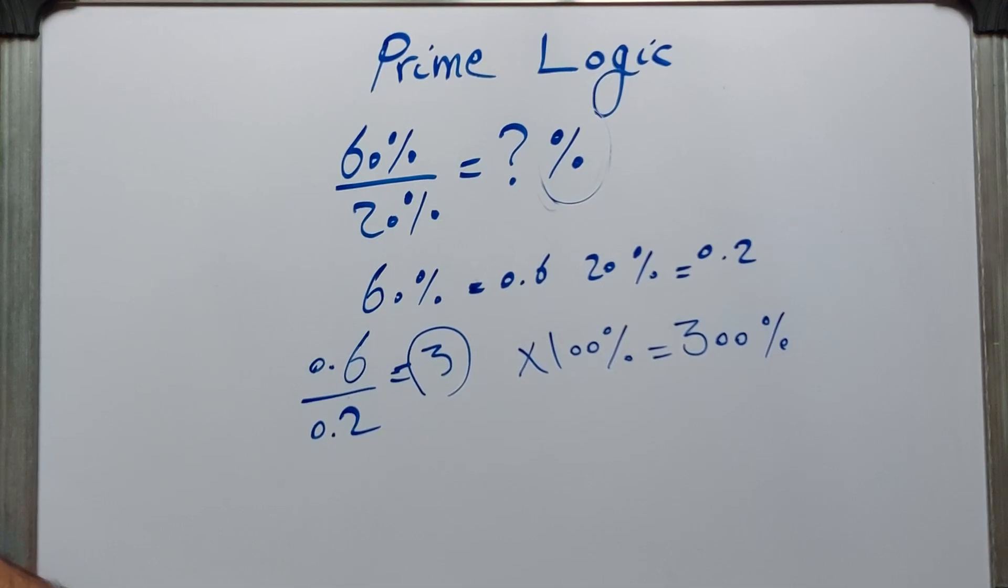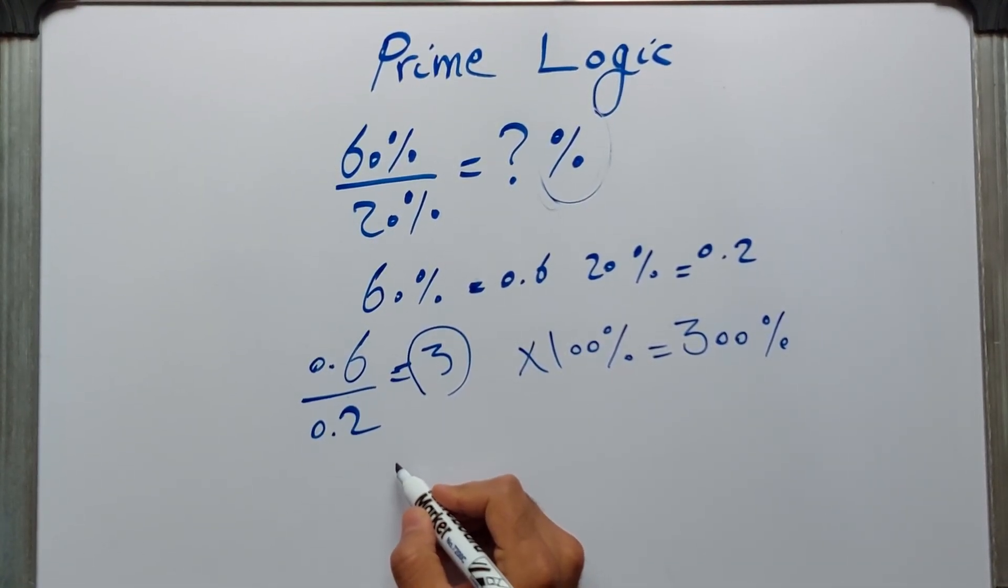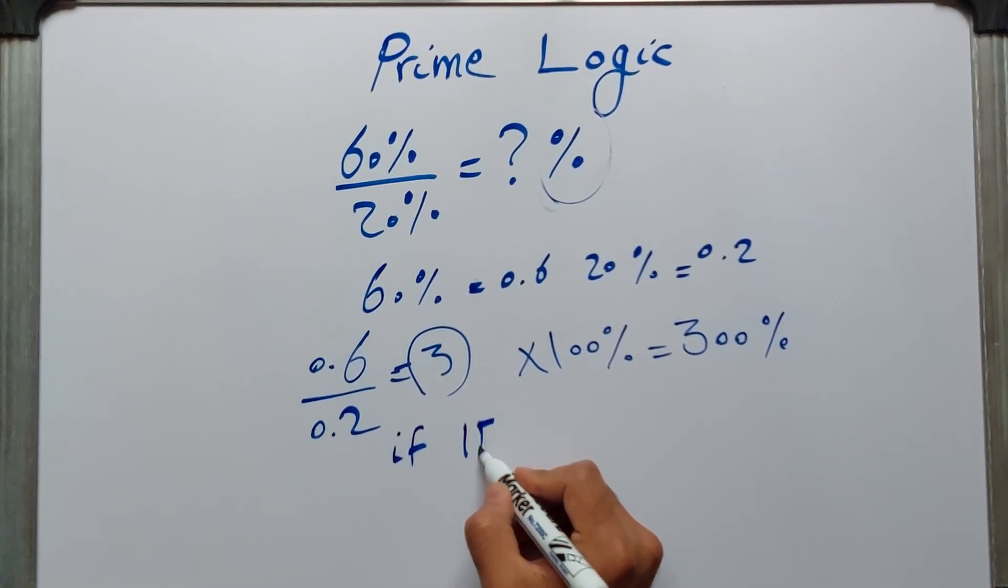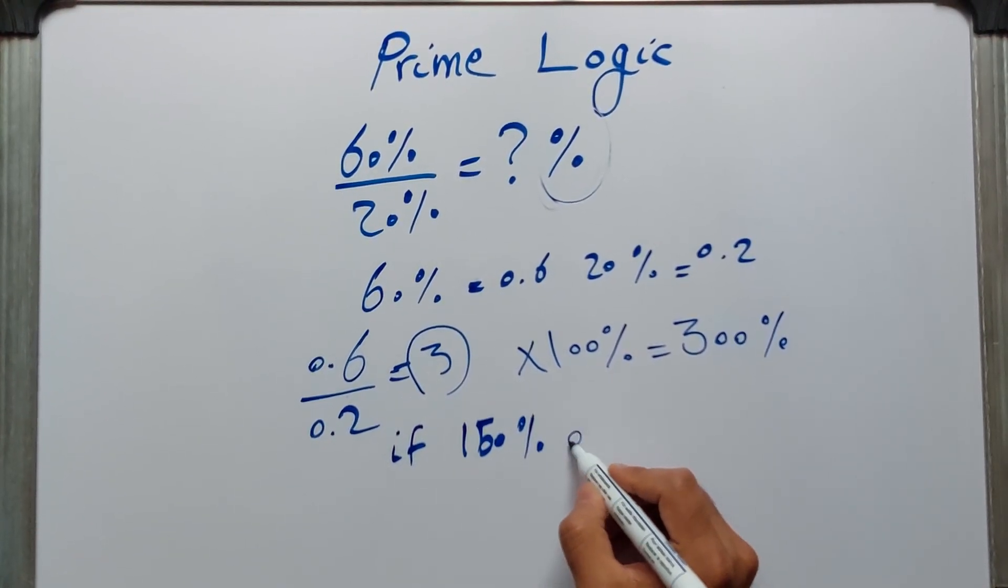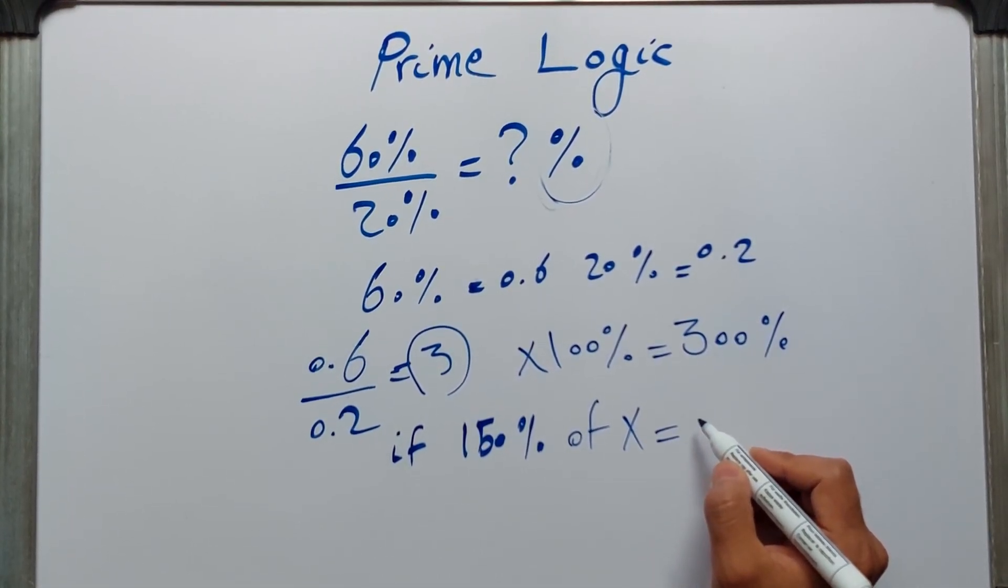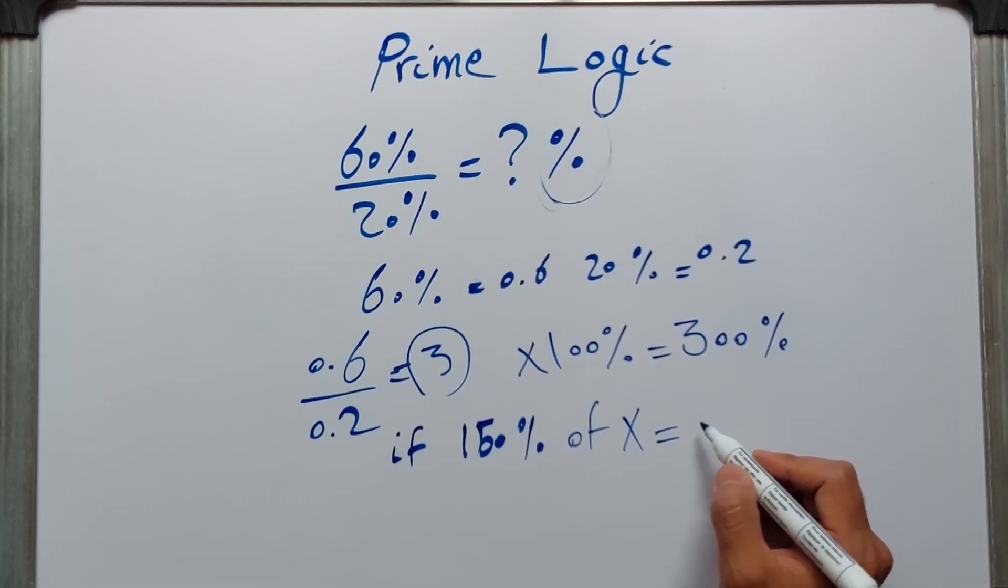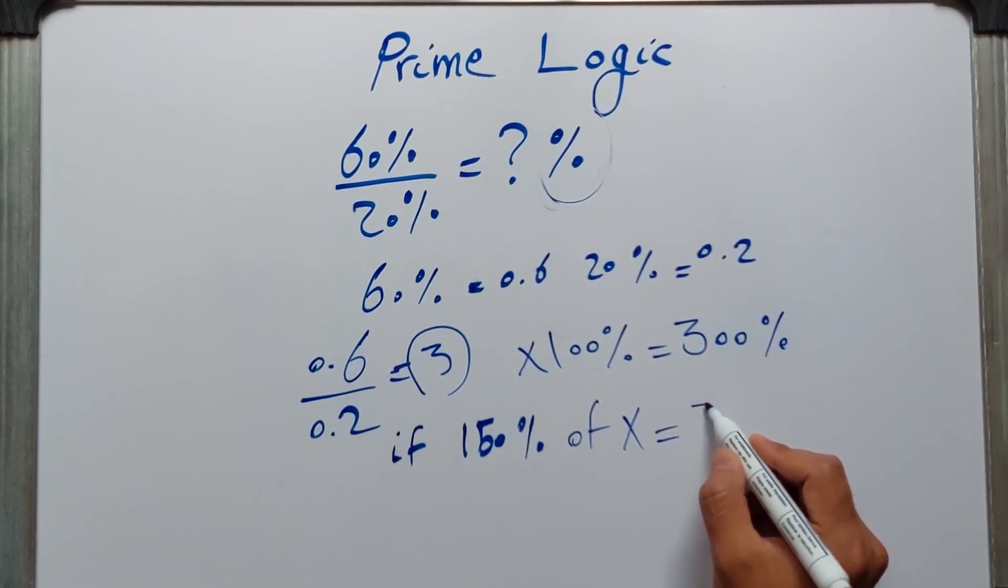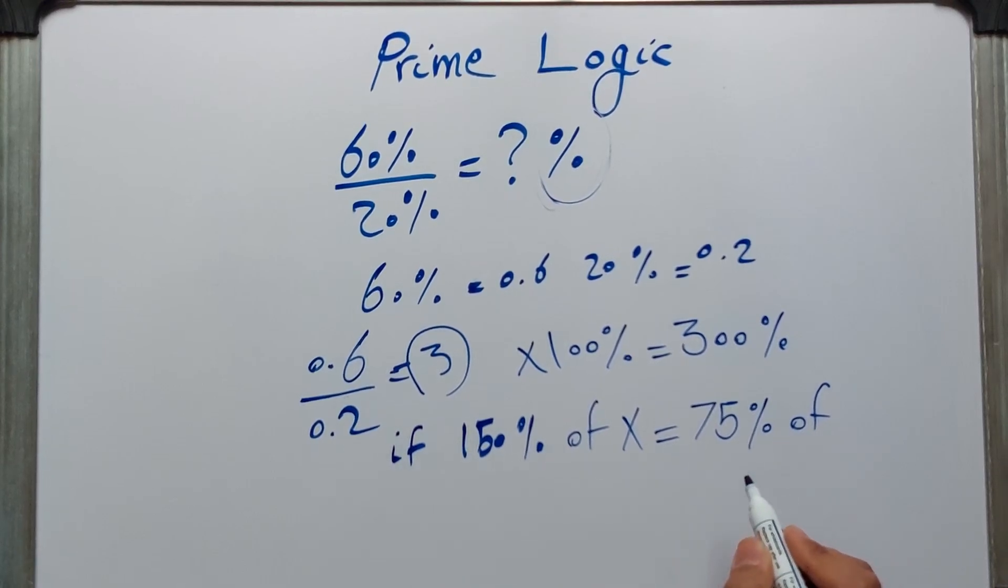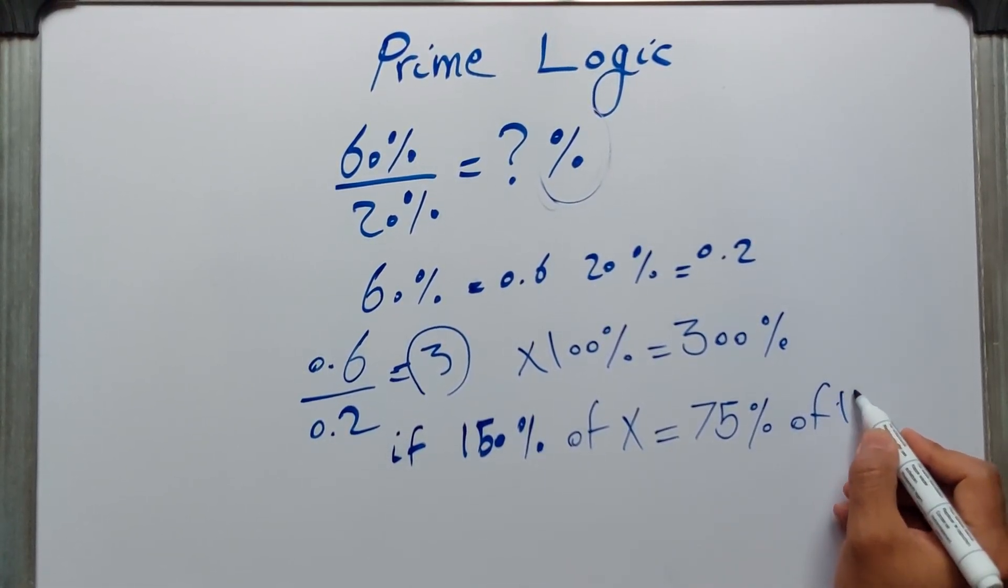Just imagine, for example, if 150% of x equals 75% of y. So this is the assumption: 150% of x equals 75% of y.